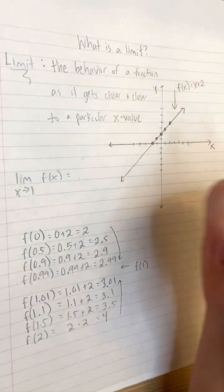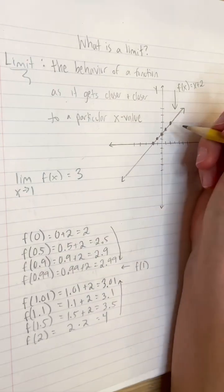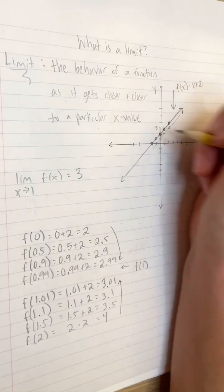On the graph too, we see that our function gets closer and closer to the y-coordinate 3 on the right and left side of the x-coordinate 1.